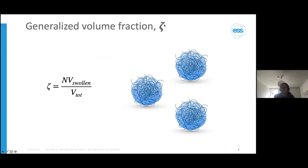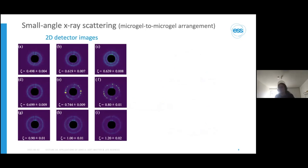Theta essentially refers to the number of microgels multiplied by the volume of the swollen microgels divided by the total volume—it's more or less proportional to concentration. This is where we get into small-angle scattering. In this case we started with small-angle X-ray scattering as a tool to look at the overall microgel-to-microgel arrangement—our structure factor. Looking at the 2D scattering images, we go from lowest concentration in panel A right up to highest concentration in panel I.